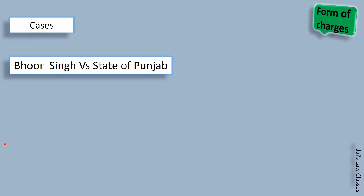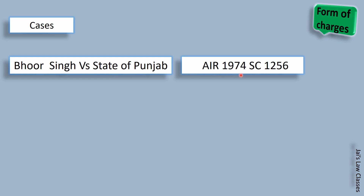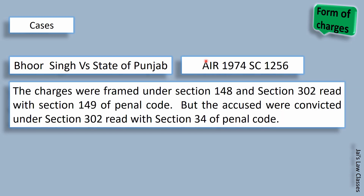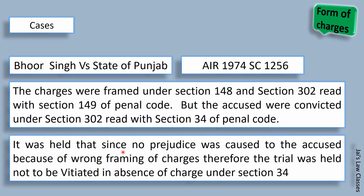In Bahur Singh v. State of Punjab, AIR 1974 Supreme Court 1256, the charges were framed under Section 148 and Section 302 read with Section 149 of IPC, but the accused were convicted under Section 302 read with Section 34 of IPC. It was held that since no prejudice was caused to the accused because of the wrong framing of the charges, the trial was held not to be vitiated in the absence of a charge under Section 34.